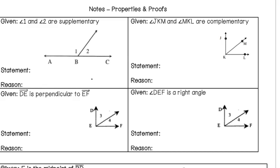In our video today, we're going to be continuing to talk about properties and proofs and how we can use our geometric theorems, vocabulary, and postulates in order to defend or prove our given information. We're going to start with a couple more examples where we're given either a diagram or a statement or both, and we're asked to write a statement and provide a reason to help us practice what we're looking for when writing proofs.